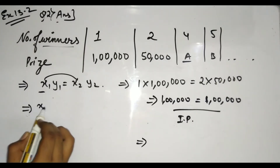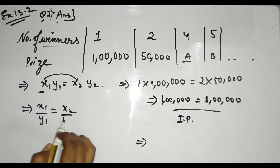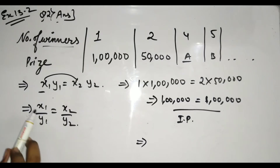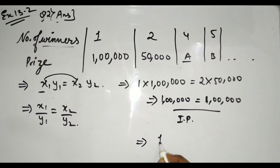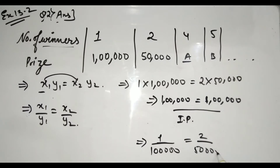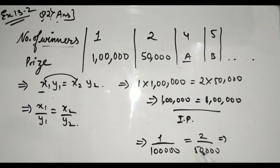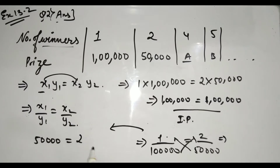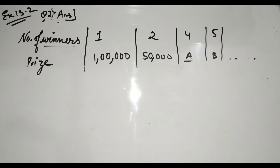To also verify it is not direct proportion: in direct proportion x1/y1 = x2/y2, so 1/1 lakh = 2/50,000. Cross-multiplying gives 50,000 = 2 lakh, which is not equal. Therefore it is not directly proportional — it is inverse proportion.